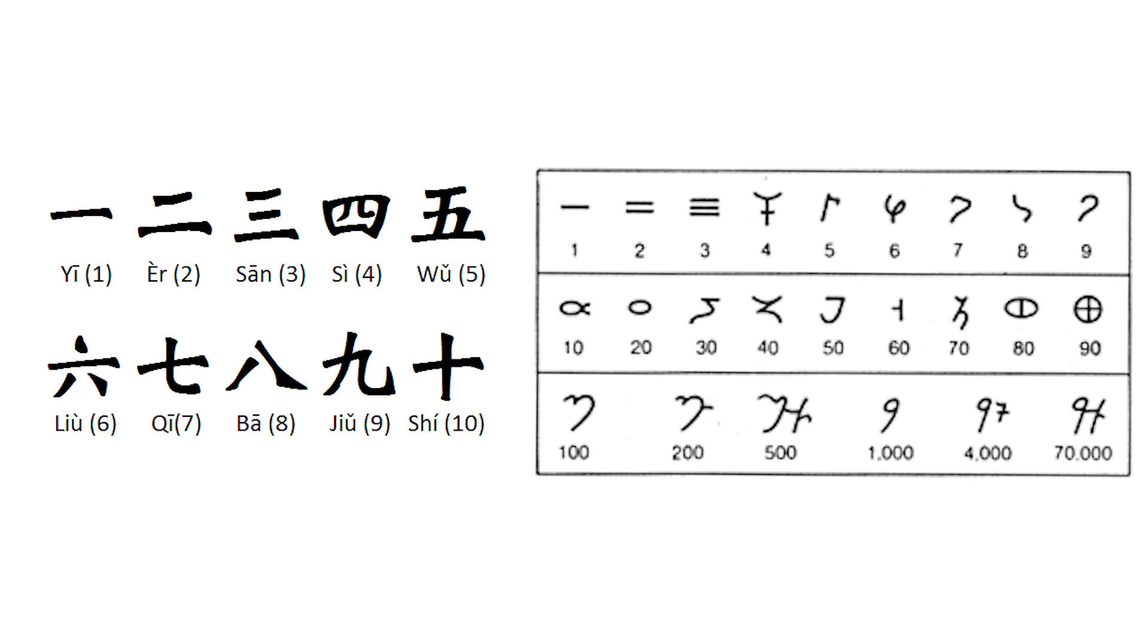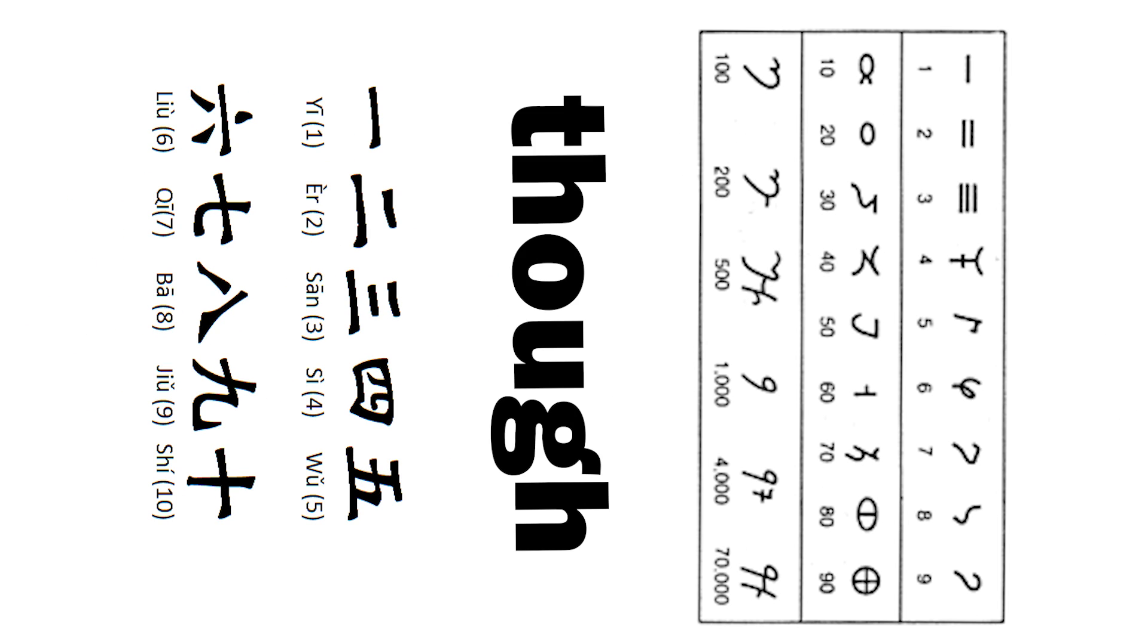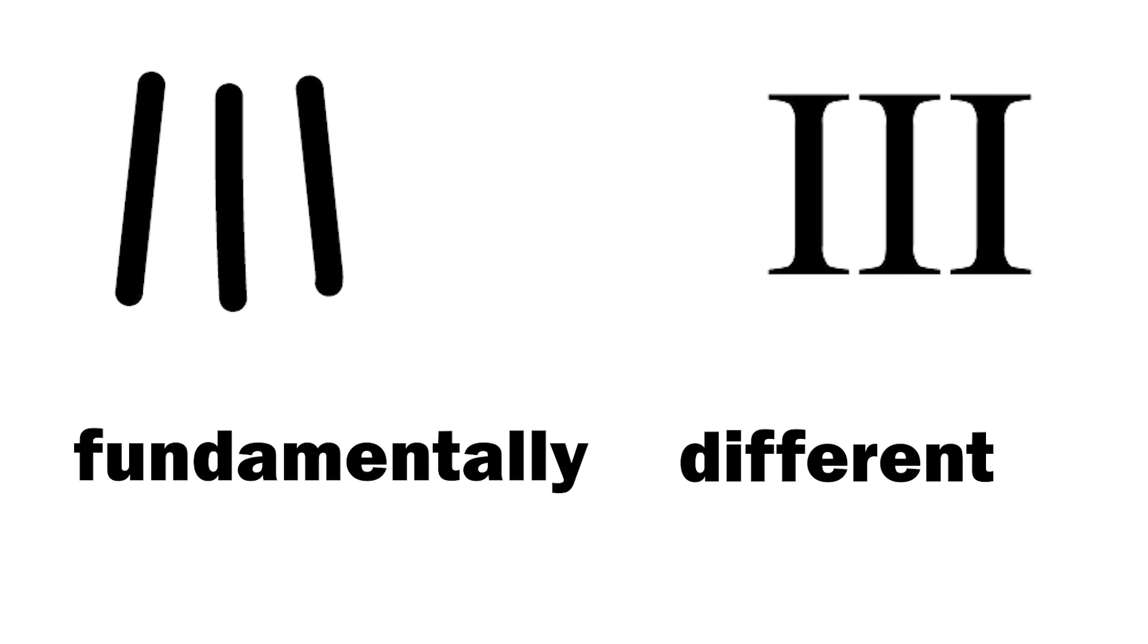Up to counting to 3, this tally system is visually identical to Roman numerals. We also see this example in Chinese numbers and the Brahmi numeral system if rotated 90 degrees. Even though they look visually the same, these 3 strokes of a tally and these 3 in Roman numerals are fundamentally different.